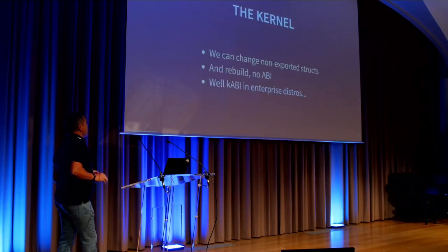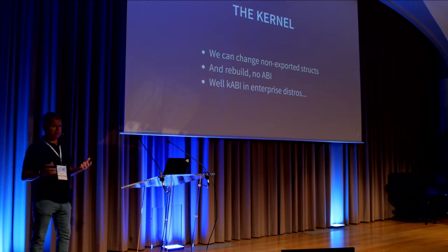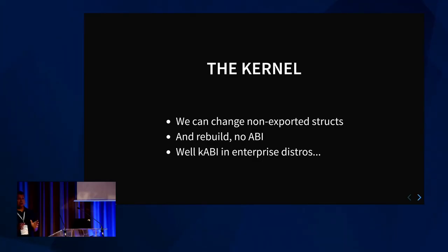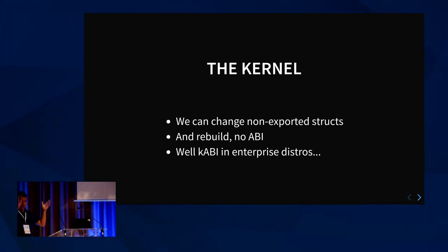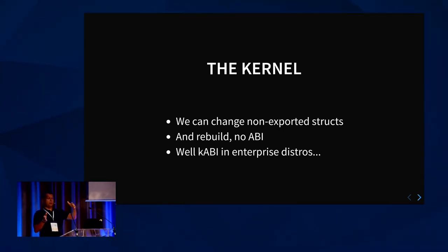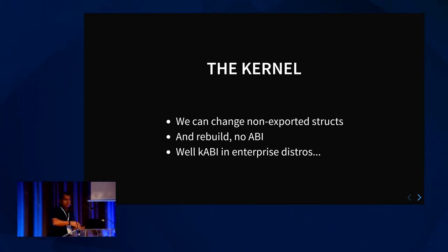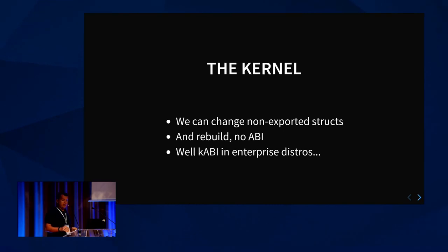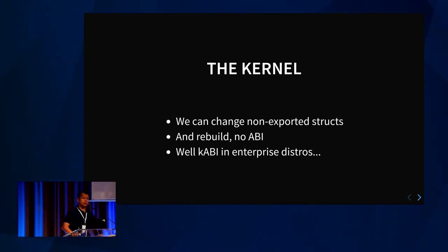In the kernel, we can change non-exported structs and we do it all the time. There are parts of the kernel that get in the way, like some data structures in the kernel that say 'randomize the position of those fields' — task_struct has a block of fields where you can tell the compiler to randomize when generating it. But usually in the kernel you can change those non-ABI structs and rebuild — unless you work for an Enterprise Distro, and then you have KABI and limitations, because you are establishing a contract with special customers.